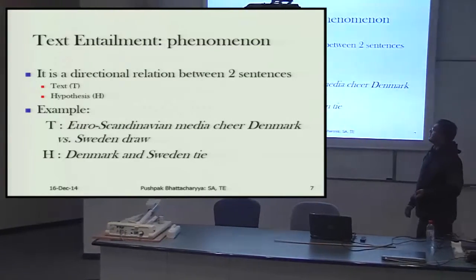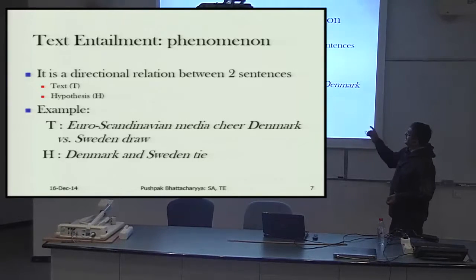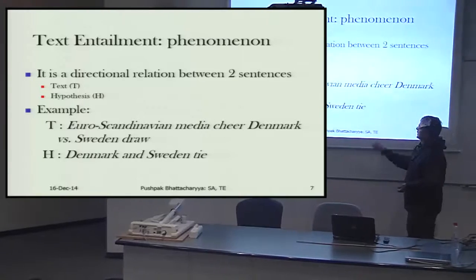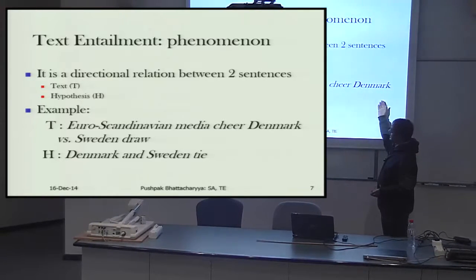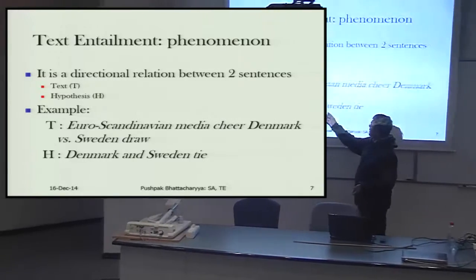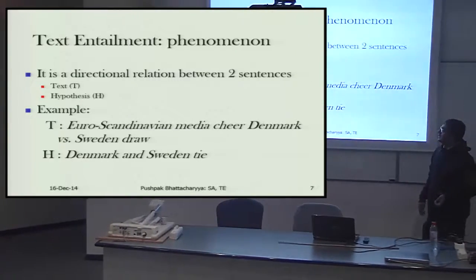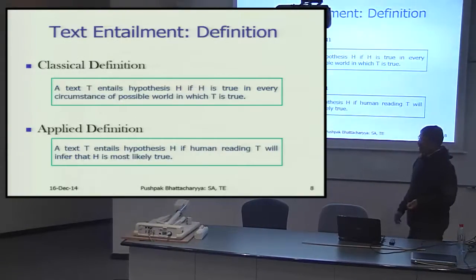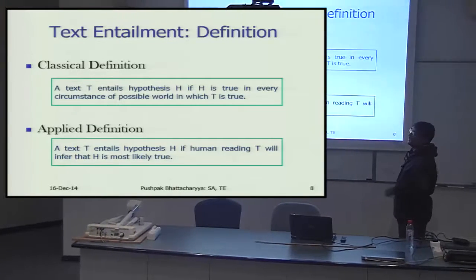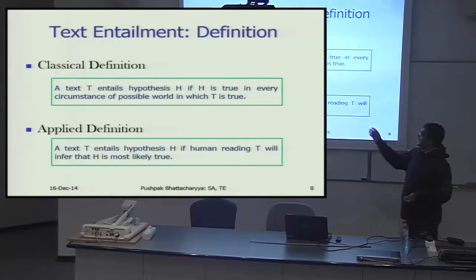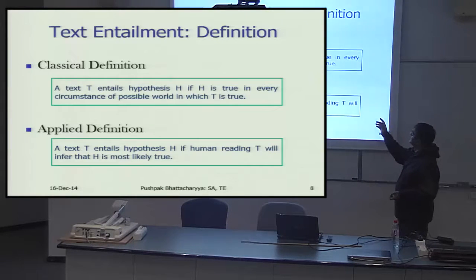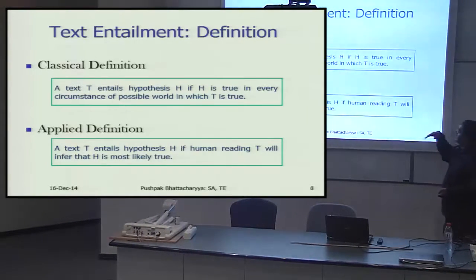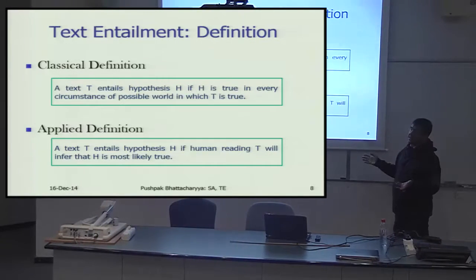The text entailment phenomenon is described as a directional relation between two sentences. If we have a text T and a hypothesis H — for example, T is 'Euro-Scandinavian media cheer Denmark versus Sweden draw' and H is 'Denmark and Sweden tie' — then T surely entails H. The classical definition of entailment comes from logic: a text T entails hypothesis H if H is true in every possible world in which T is true.